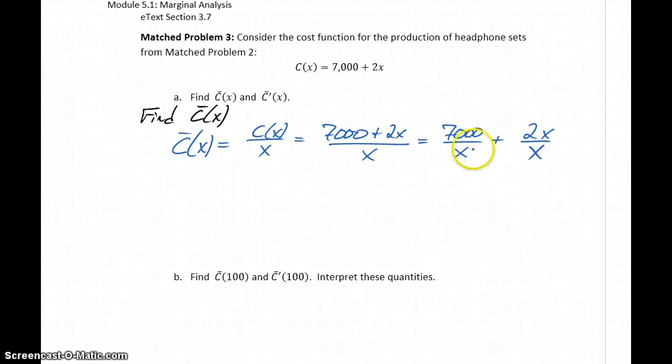We can do that because now what we have are two separate fractions with the same common denominator, which means we can add these together just by adding the numerators together. So 7,000 plus 2x would just be our 7,000 plus 2x over x, that common denominator.